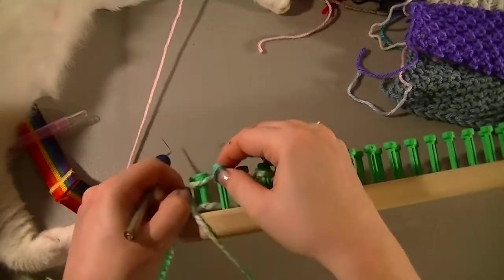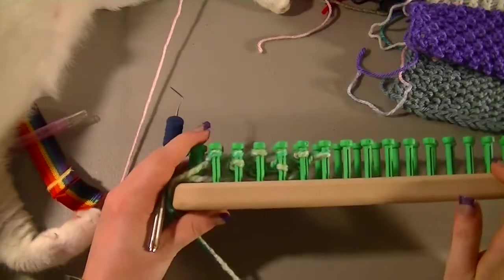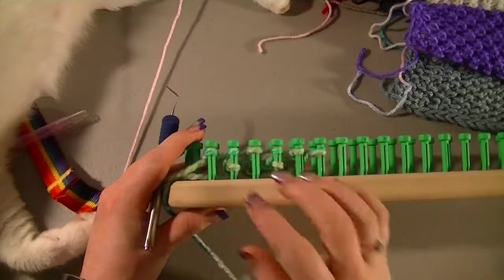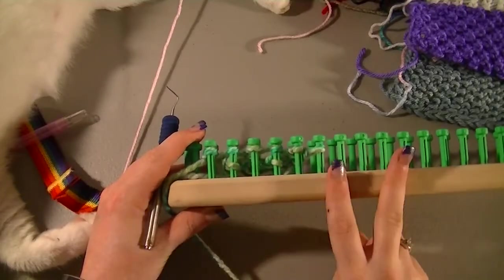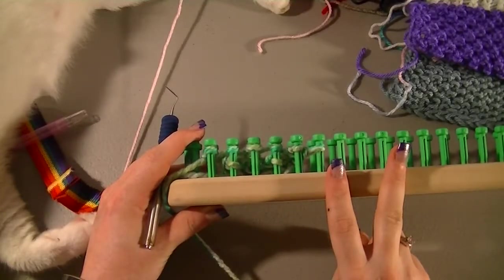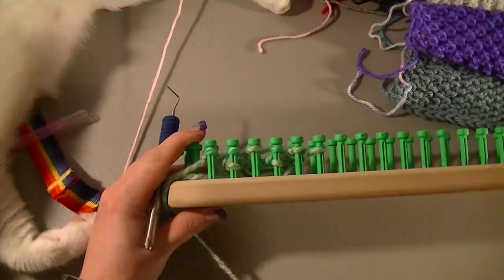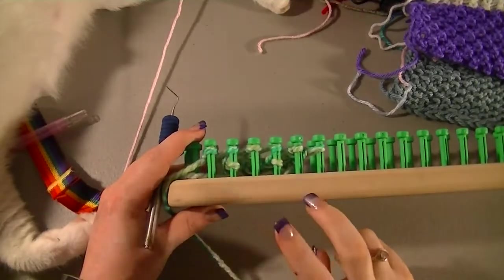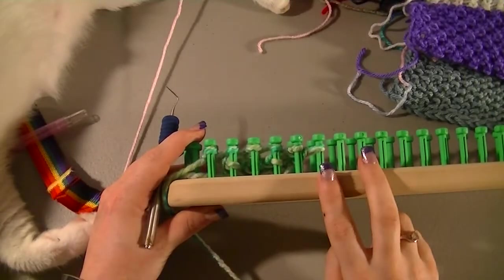So that's four rows and you just repeat those. That's all you do. So you do two rows of e-wrap, purl, and of course repeat until the end of the project. Then you do two rows of purl, e-wrap.